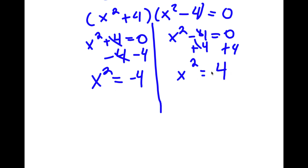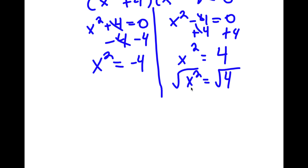Now, for x squared equals positive 4, this is pretty simple. We just take the square root on both sides. The square root of x squared is x, and the square root of 4 is going to equal positive or negative 2.